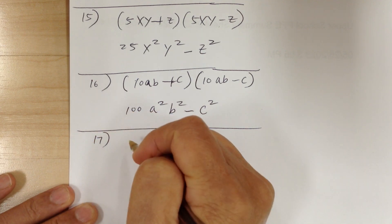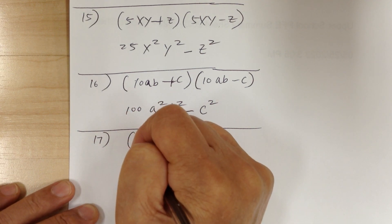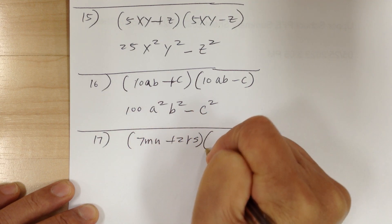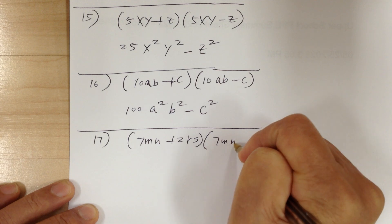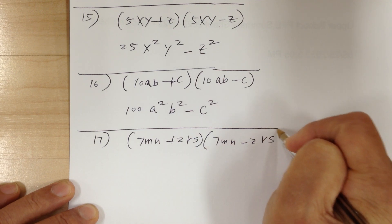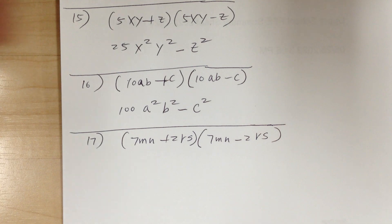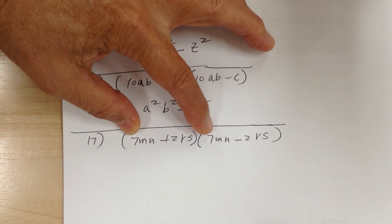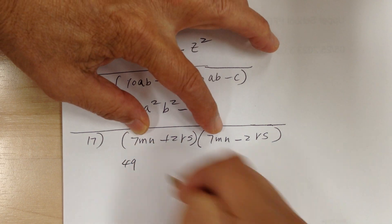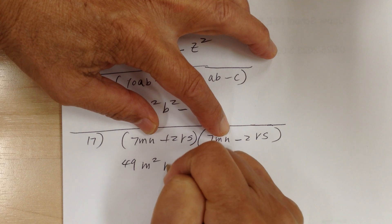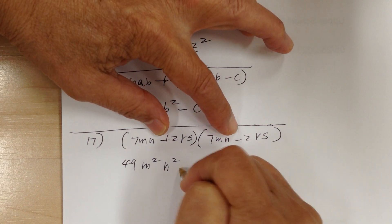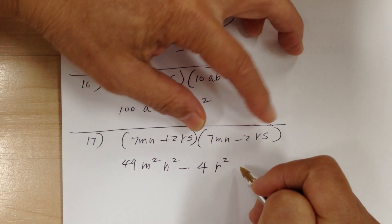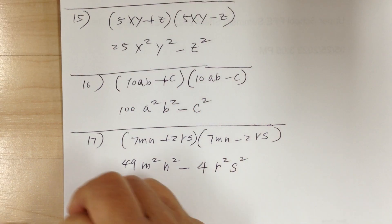Number 17: you have 7mn plus 2rs times 7mn minus 2rs. Conjugate, so multiply F and L: 7 times 7 is 49, m times m is m squared, n times n is n squared, plus times minus is minus, 2 times 2 is 4, r times r is r squared, s times s is s squared.